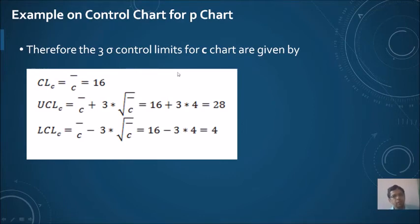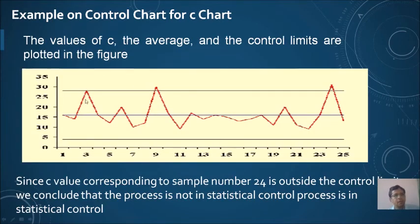Using these three values of central line, UCL, and LCL, we plot a graph. On the x-axis, the sample number is given, which varies from 1 to 25. The upper control limit as well as the lower control limit is plotted, and the red line is the number of defects line.